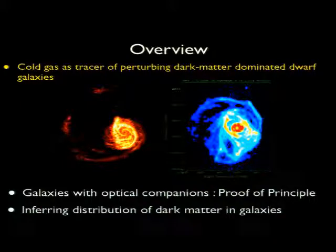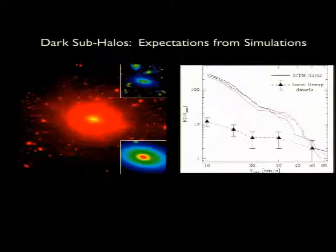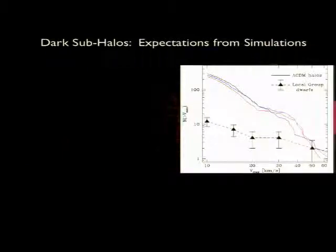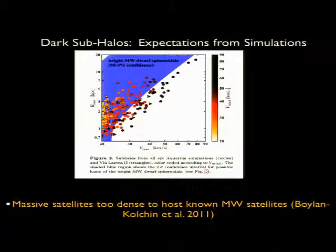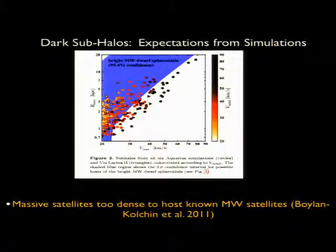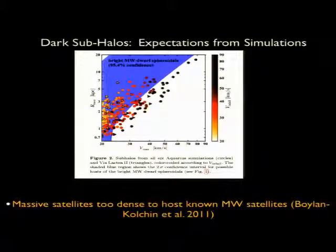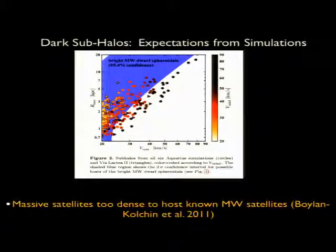Some of our work is motivated by discrepancies known between the CDM paradigm and subgalactic scales, such as the missing satellites problem, as well as more recent work highlighting that massive satellites with Vmax of order 40 kilometers per second are too dense to host the known bright Milky Way satellites. These satellites with Vmax of order 40 km/s would certainly leave a visible imprint on the outer H1 disks of spirals. So you may be able to hunt for them by analyzing their gravitational influence, even if they're too dim to be seen from their optical light.